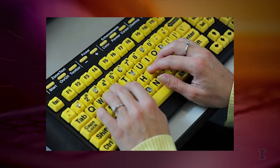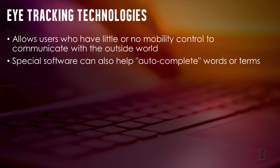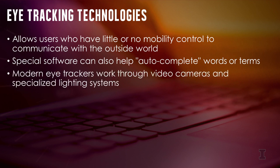Adaptive keyboards can be made to facilitate low vision, blind, and mobility impaired users. An adaptive keyboard will often be brightly colored with large keys, which are helpful for wand users and those with fine motor control problems. Many keyboard models come with overlays that help various types of disabilities, and some even come with their own proprietary software. Eye tracking technology allows users who have little or no mobility control to communicate with the outside world. Special software can also help auto-complete words or terms to speed things up. Modern eye trackers work through video cameras and specialized lighting systems, using light-emitting diodes to illuminate the corneal surface of the eye, giving extremely detailed, fine geometric information.